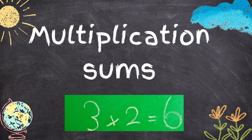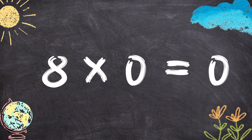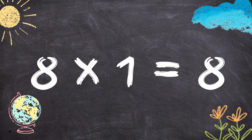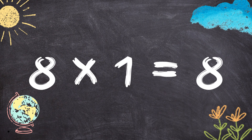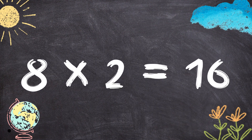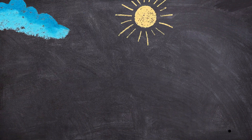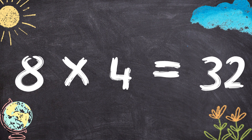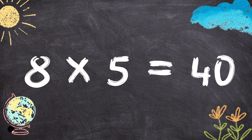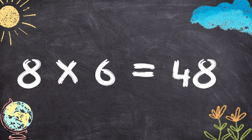Today we'll be doing multiplication results by 8. 8 x 0 equals to 0, 8 x 1 equals to 8, 8 x 2 equals to 16, 8 x 3 equals to 24, 8 x 4 equals to 32, 8 x 5 equals to 14, 8 x 6 equals to 48.